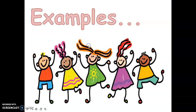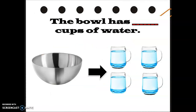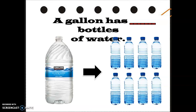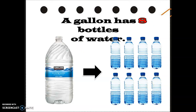Let's have some examples for capacity. The bowl has blank cups of water — let's count the cups: one, two, three, four. Very good! The bowl has four cups of water. Good job! Next, a gallon has blank bottles of water — let's count the bottles: one, two, three, four, five, six, seven, eight. Very good! A gallon has eight bottles of water. Good job!